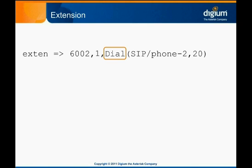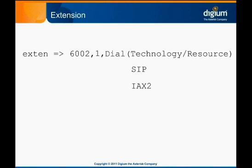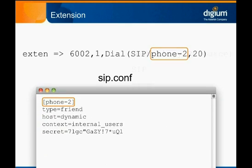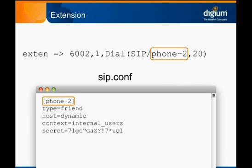Let's look at the syntax for the arguments passed to the Dial application. The format for this argument takes the form of technology/resource. The technology must represent an available Asterisk channel driver, such as SIP, IAX, or DAHDI. A valid resource must be the name of a phone or trunk identified in the configuration file of the specified channel driver. In our case, this is sip.conf. Phone-2 is the section name contained in the square brackets.